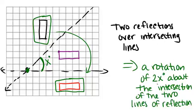So those are the three most common compositions of transformations, although you could compose any two transformations however you want, or even more than two, to get new results.